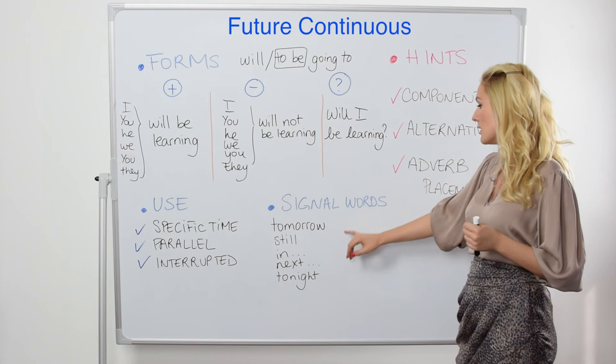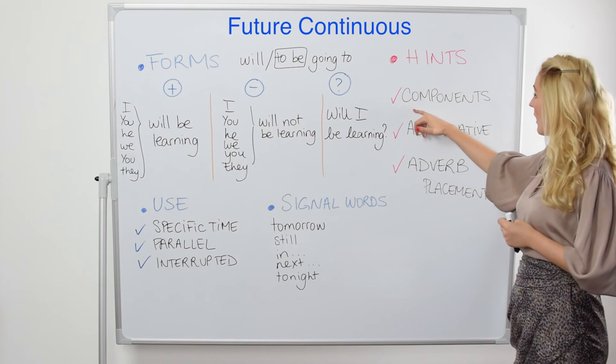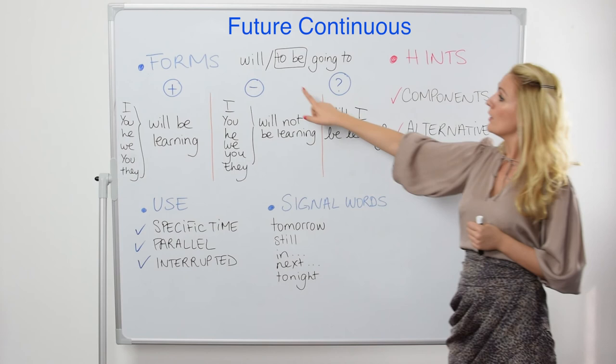These are various signal words you can use comfortably with this tense: tomorrow, still, in, next, tonight, and so on. Make sure you have all the components when writing or using this tense. Don't forget that you have two forms that are interchangeable, and don't forget to look at where to place the adverb when using these tenses.